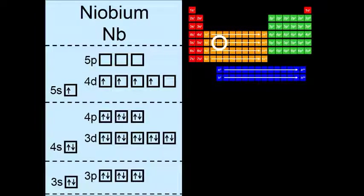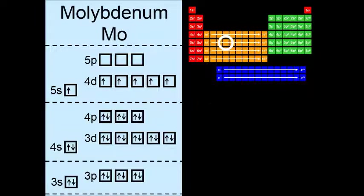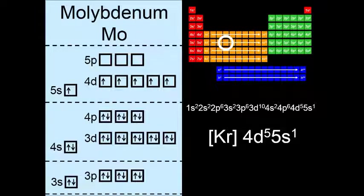So niobium looks a little bit strange, but it's 4d4 5s1. Molybdenum, 4d5 5s1. Again, these are just to show you what they are, but to not make a big deal about why the electrons seem to change their filling pattern. That's okay.